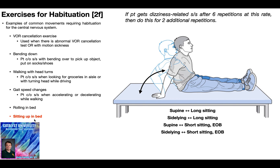The patient may also get symptoms sitting up in bed. There are a variety of ways this can occur: supine to long sitting, sidelying to long sitting, supine to short sitting on the edge of the bed, or sidelying to short sitting on the edge of the bed. It's up to you to determine the specific movement that aggravates the patient's symptoms. This is repetition-based — if the patient gets dizziness-related symptoms after six repetitions, have them do two additional repetitions for a total of eight.